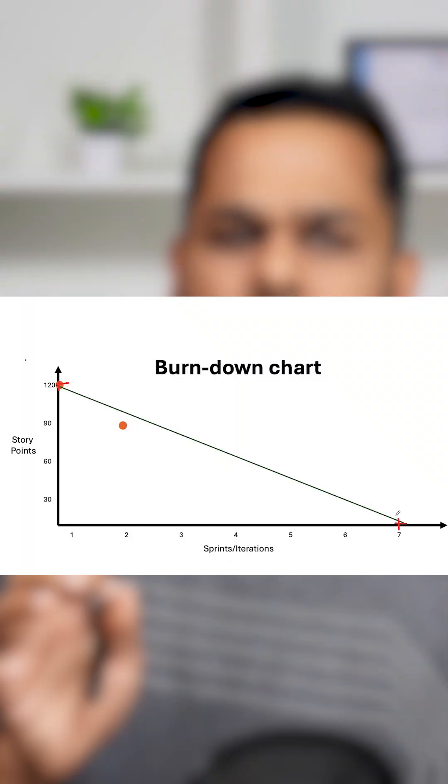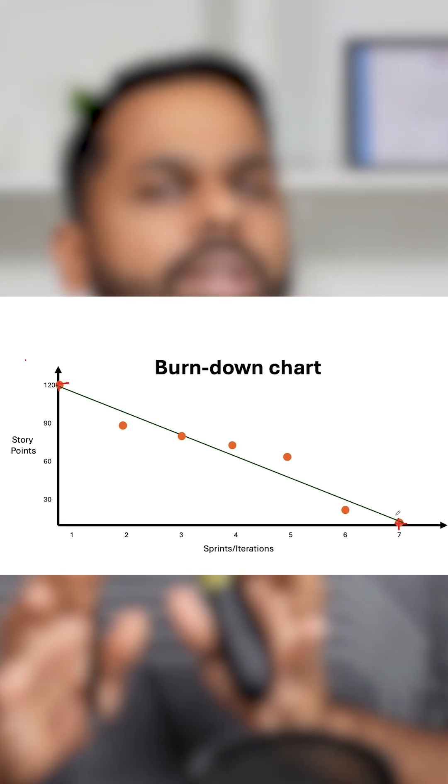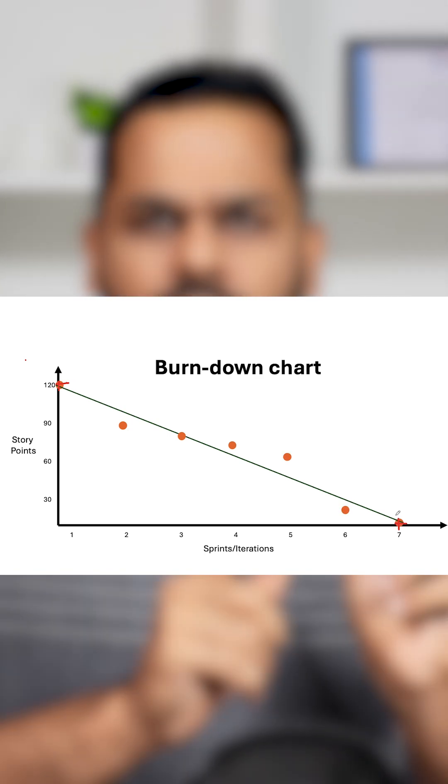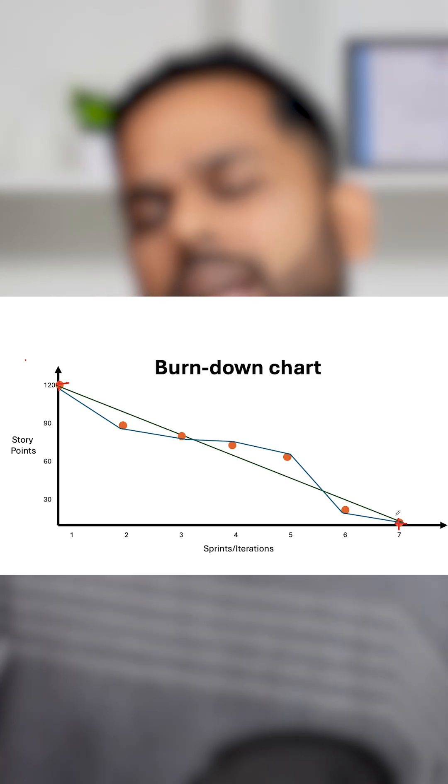Whenever the team completes the work, at the end of every sprint, they would put up on this chart how many story points are remaining. Sprint by sprint, they will show the charts and you will get these particular dots that the team could put. And when we connect these dots, we will get our actual line as well.